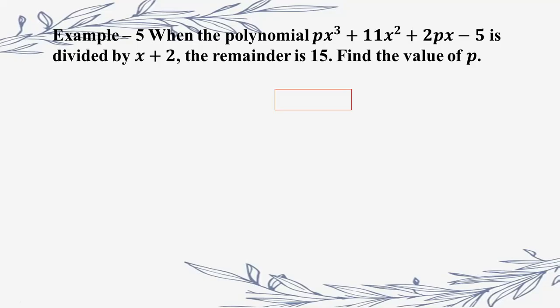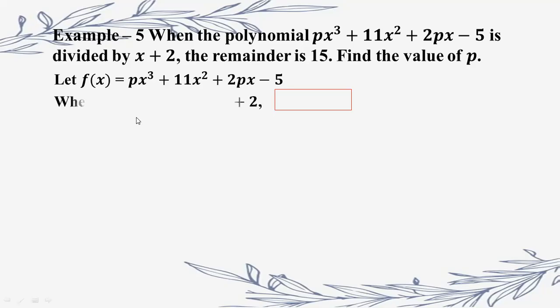Find the value of p. Let f(a) be equal to pH squared plus 11p plus 2pH minus 5. You can say that 1 is equal to 1. The result is 2h plus 2 is minus 2.